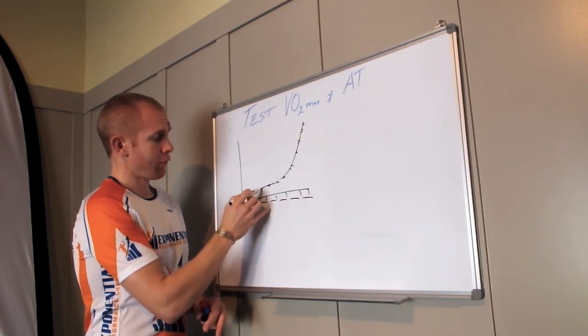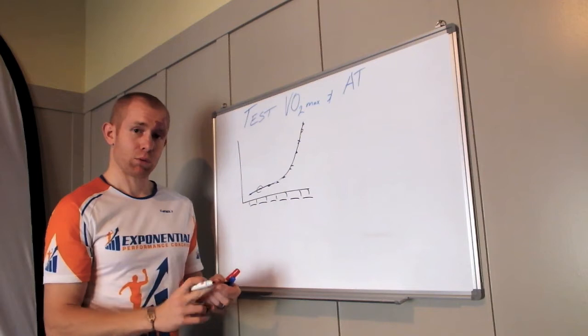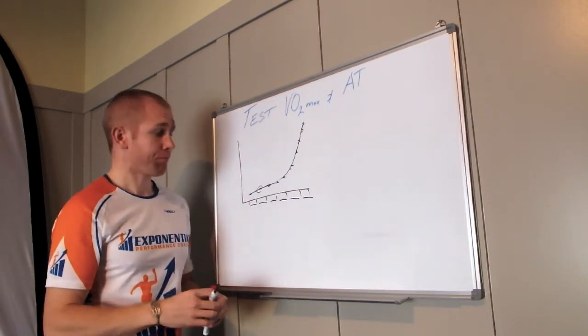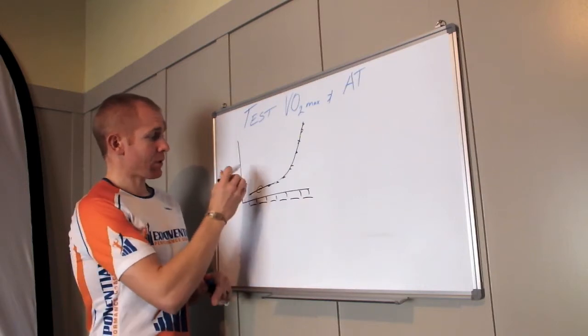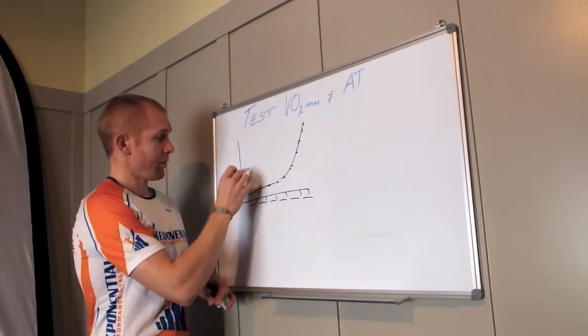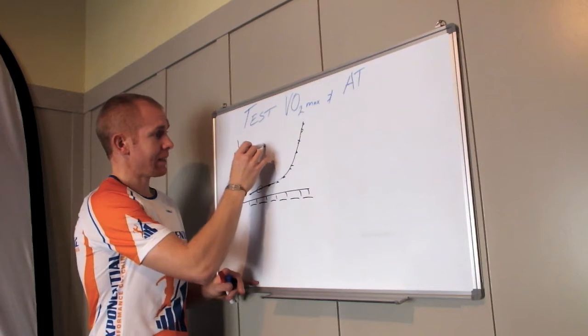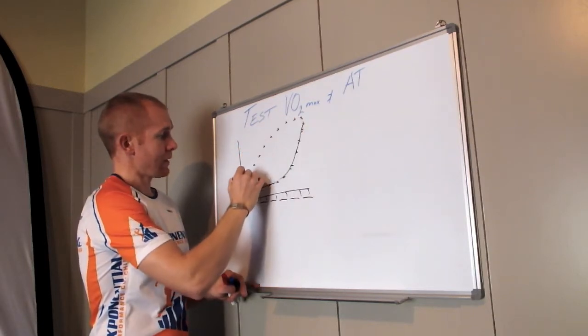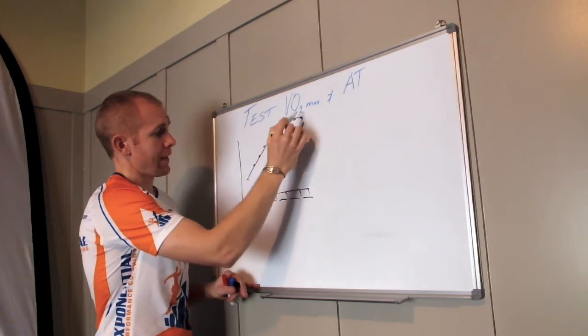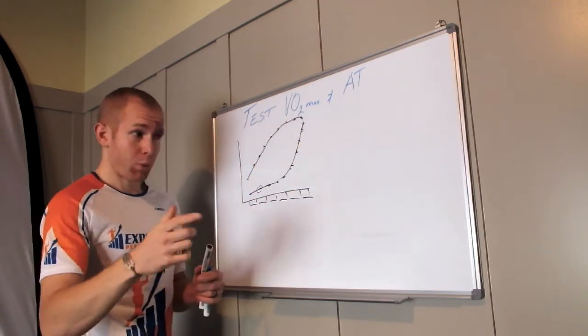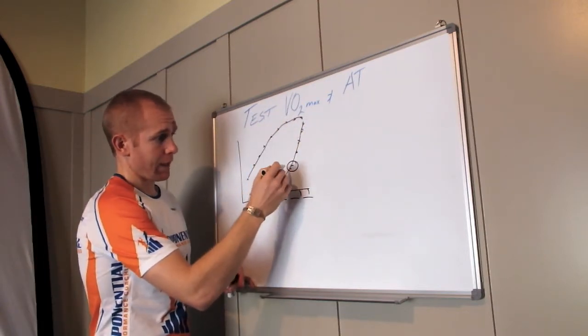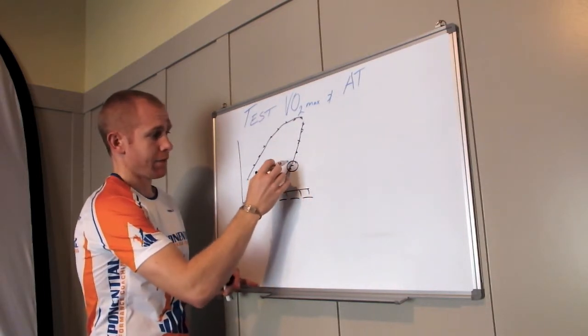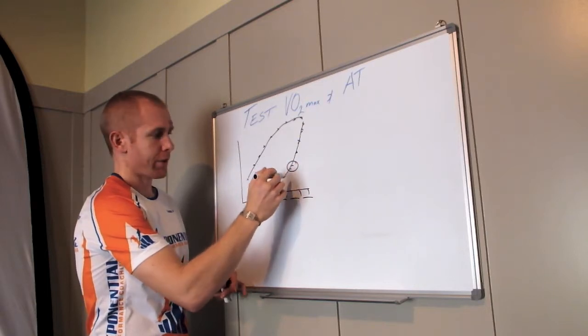At the end of every four minutes, a small blood sample is taken from your finger or earlobe and analyzed for blood lactate. At the same time, we measure heart rate. The point we're looking for is where blood lactate starts increasing exponentially to fatigue. This is your anaerobic threshold.